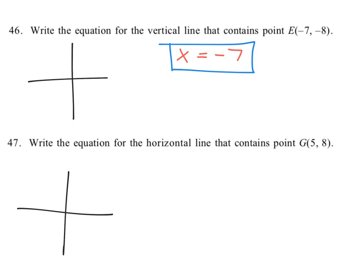But check it out. If x equals negative 7, that means every point on it has an x-coordinate of negative 7. So here you go over to negative 7 and let's say go up to 5.